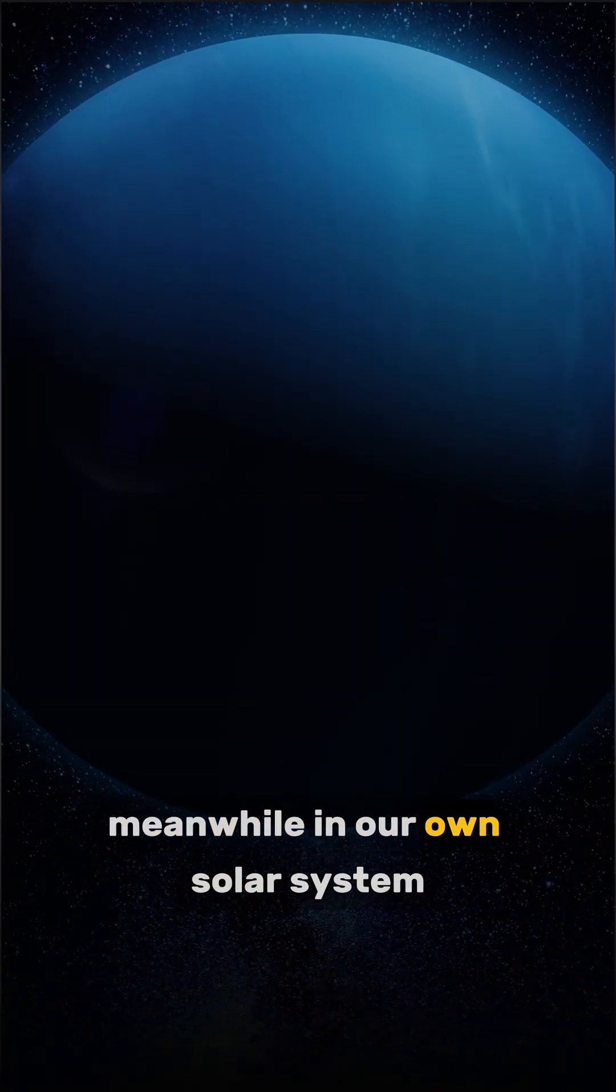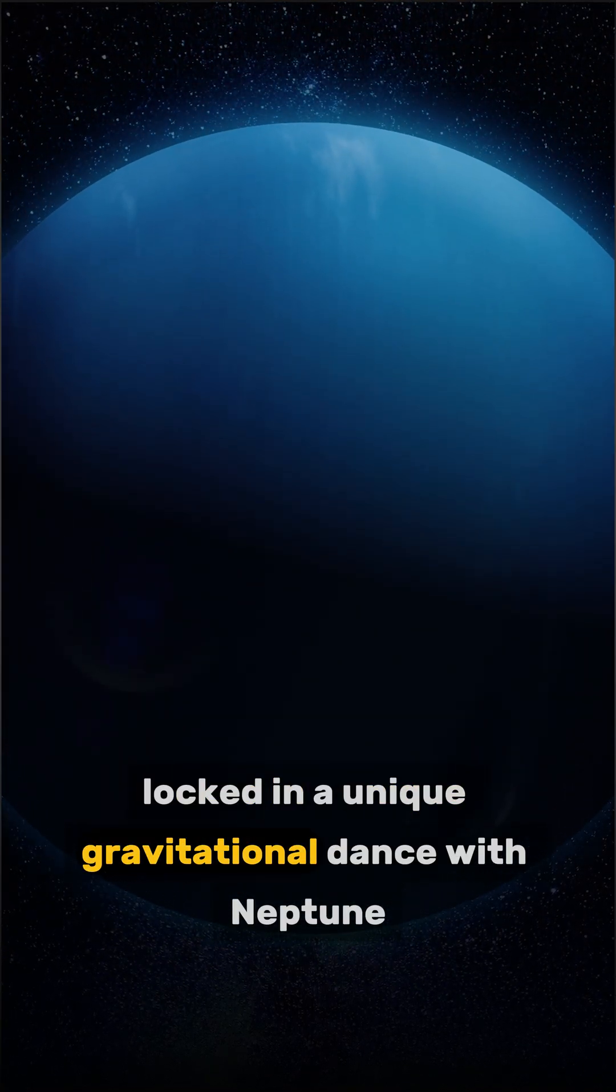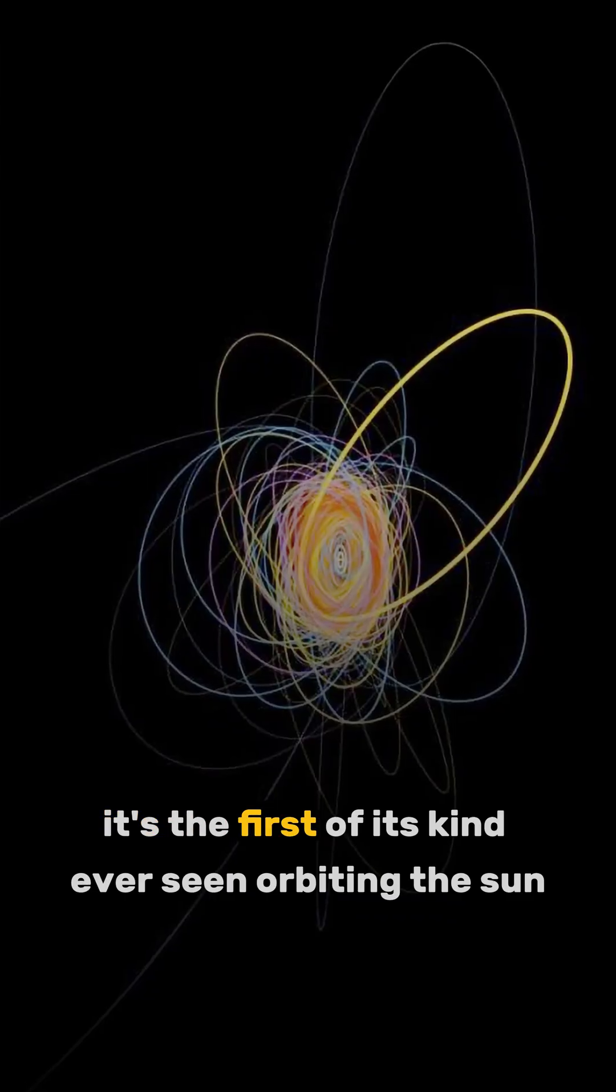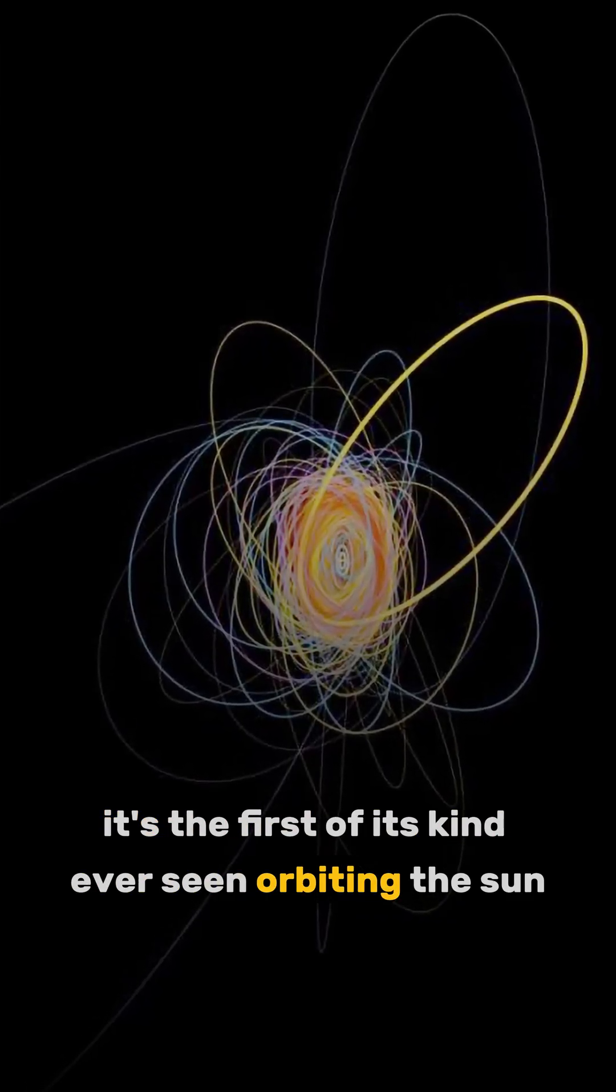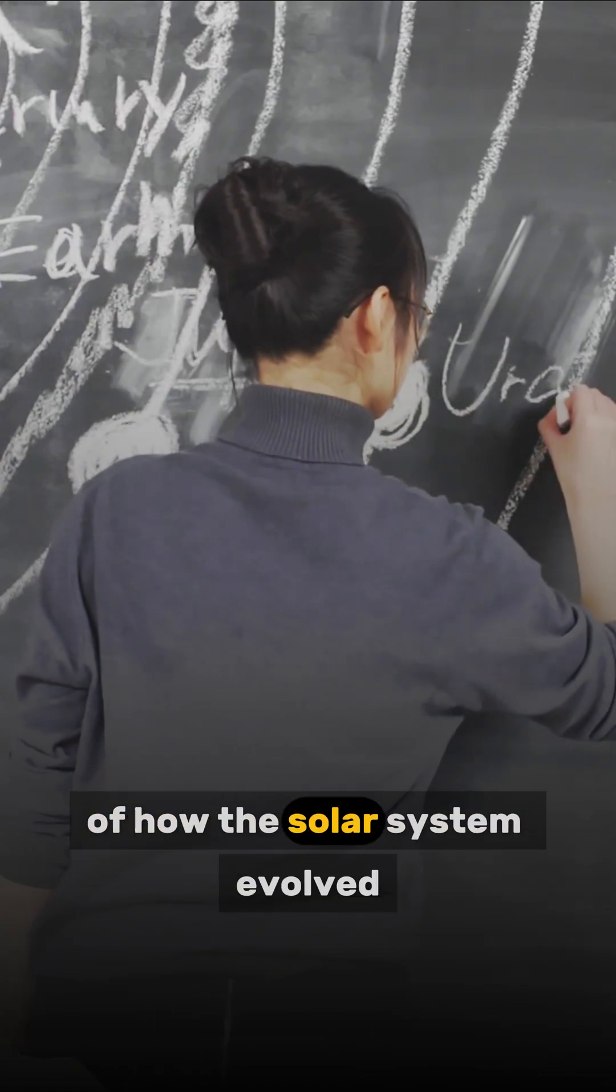Meanwhile, in our own solar system, a bizarre object named 2020 VN-40 was found locked in a unique gravitational dance with Neptune. It's the first of its kind ever seen, orbiting the sun once every 10 of Neptune's orbits, and it challenges our models of how the solar system evolved.